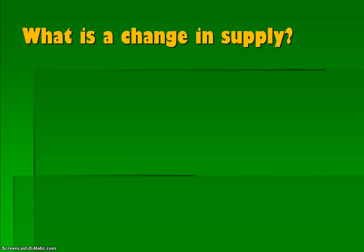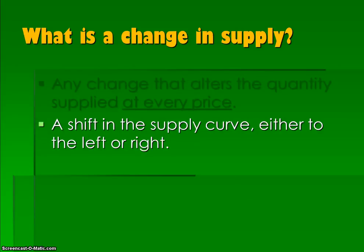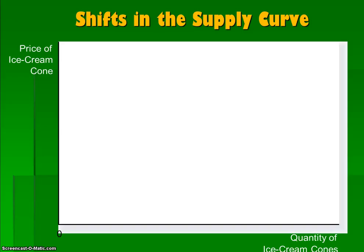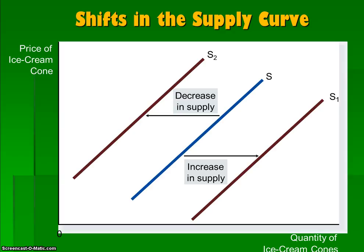Just like there's a difference between a change in demand and a change in quantity demanded, we have the same thing with supply. A change in supply is a change in the market that alters the quantity supplied at every price, so the curve actually shifts. Whereas a change in price just leads to a change in quantity supplied, which is a movement along the curve. If the curve shifts to the right, that's an increase; if the curve shifts to the left, that's a decrease. Think left and right rather than up and down — a shift to the right is an increase, a shift to the left is a decrease.